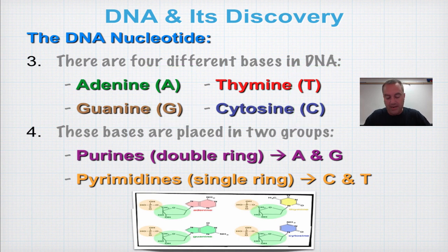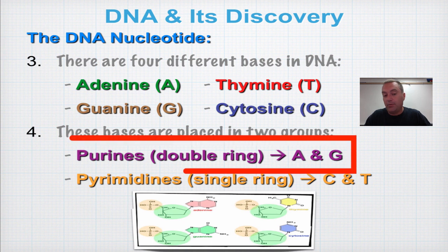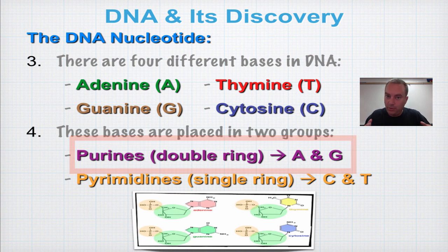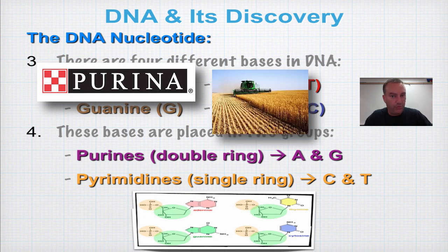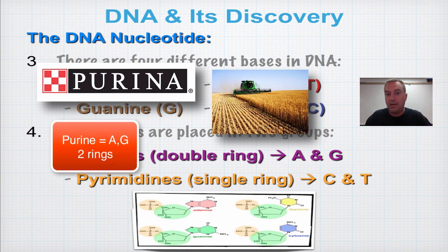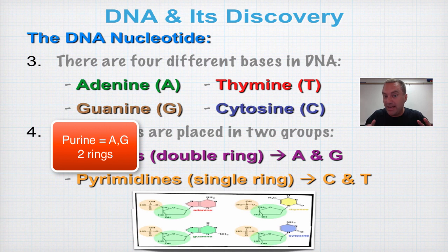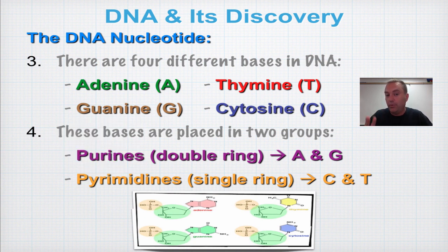The nitrogenous bases can have a single ring or a double ring. The double-ring ones are called purines, and two of the bases are purines: adenine and guanine. Here's a mnemonic: purine reminds me of Purina, the company that makes dog food. Purina is an agricultural company — agriculture is abbreviated 'Ag' — so remember: purine, Purina, agricultural company, A and G. Purines have a double ring, meaning you need two bags of Purina — one A, one G.